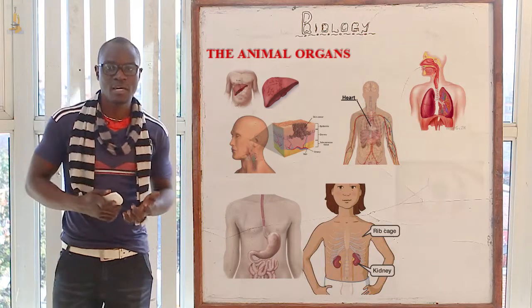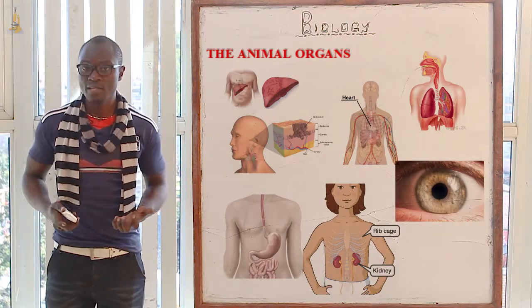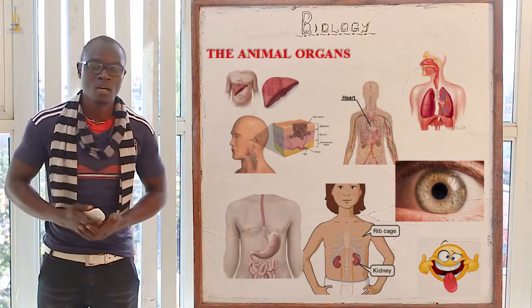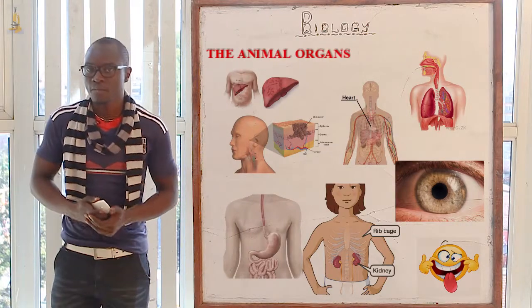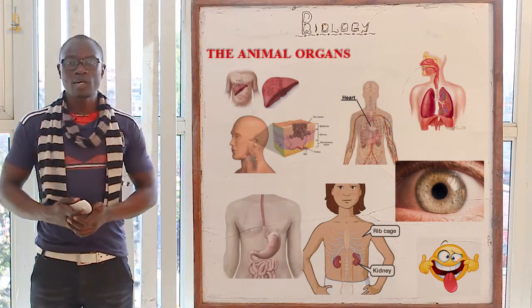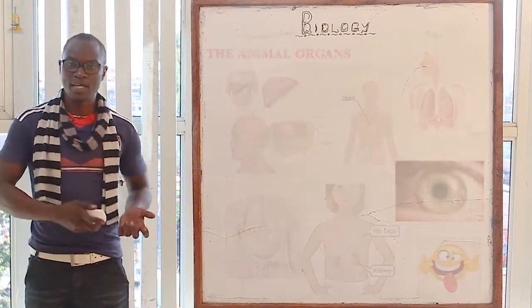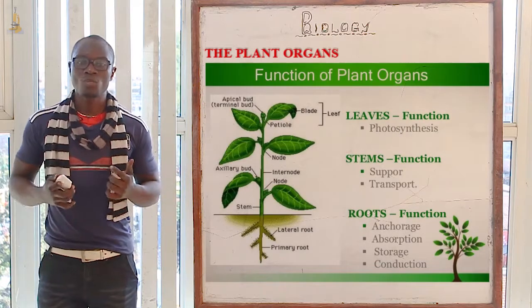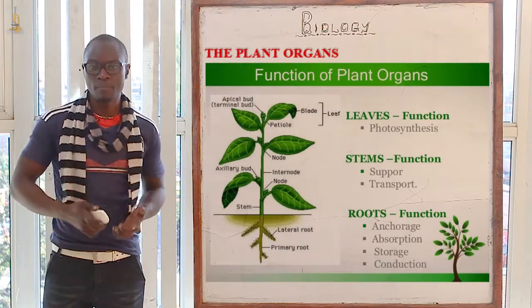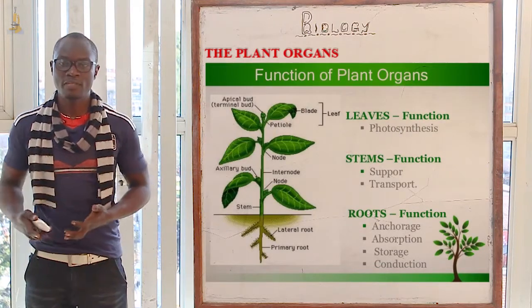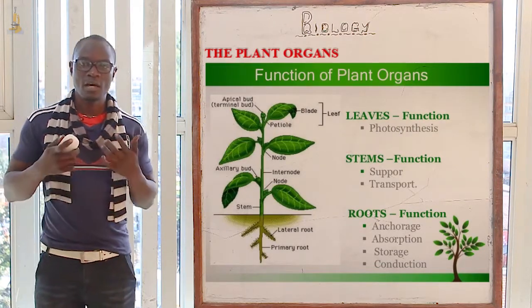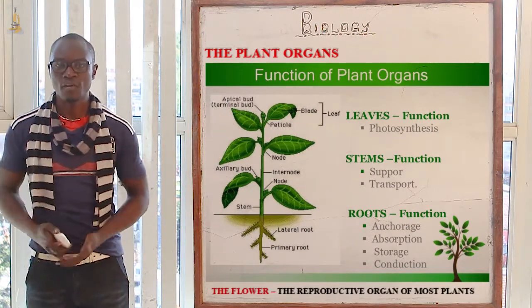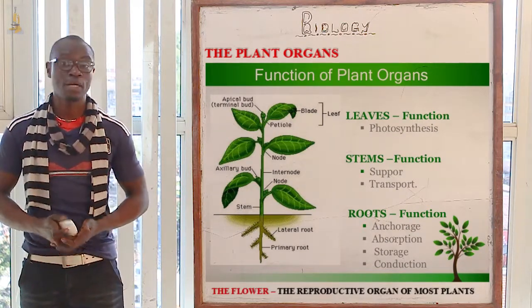We also have the kidneys, the eyes, and the tongue for tasting. Now let's look at the different organs in the plant. The organs in plants include the stem, the leaves, the roots, and finally the flowers for reproduction.